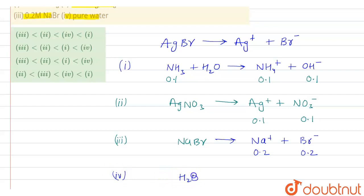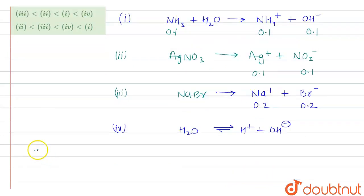The fourth option is pure water. In pure water, H₂O is a weak electrolyte and will dissociate into H⁺ and OH⁻ ions. Now let's talk about the common ion effect, which we will use in this question.